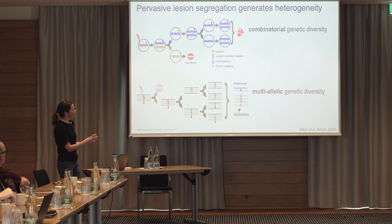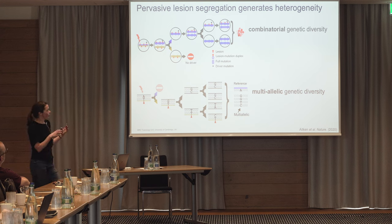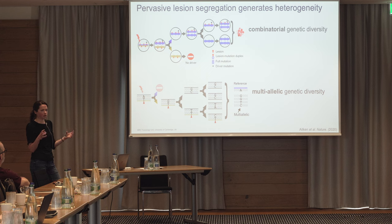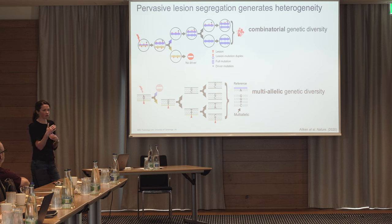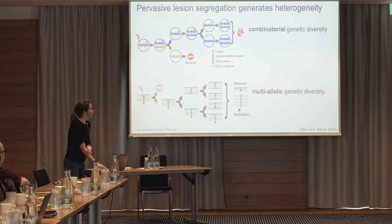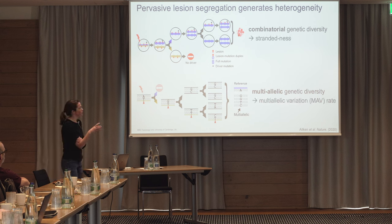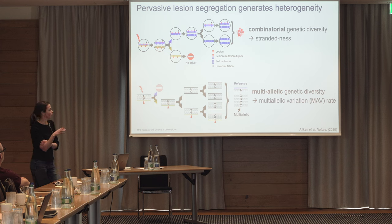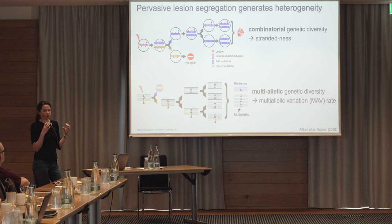So from this first part: at a large scale we get combinatorial genetic diversity of whole chromosomes with mutational biases segregating between cells, and we also get multiallelic genetic diversity at specific loci with multiple different variants at the same site. From this we can infer the strandedness — which strand the mutation is happening on — and we can calculate the multiallelic variant rate, which is separate from the mutation rate; we can look at what proportion of all mutations are multiallelic.